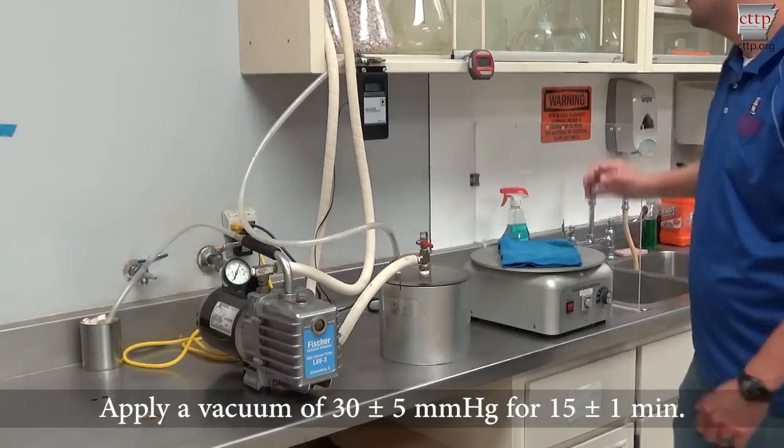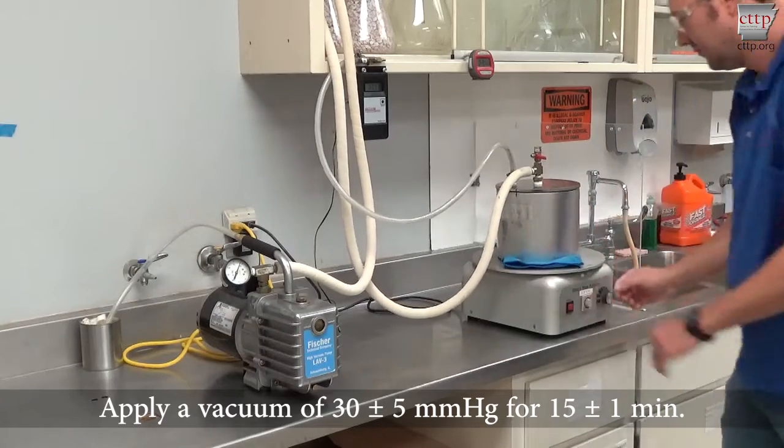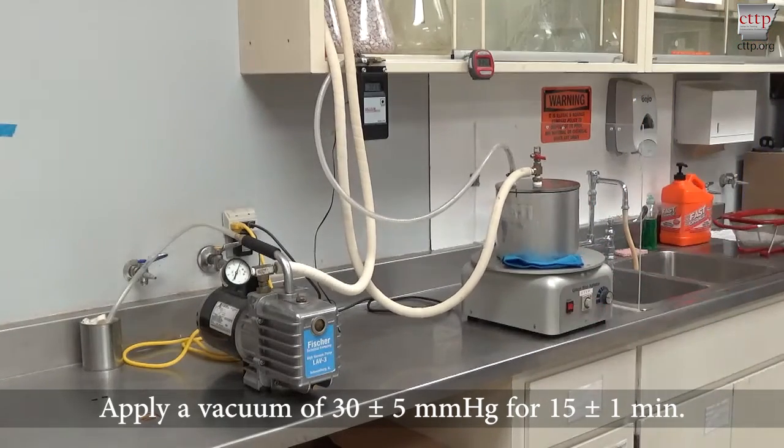Apply a vacuum of 30 plus or minus 5 millimeters of mercury for 15 minutes. When the pressure reaches the required range, start the timer.